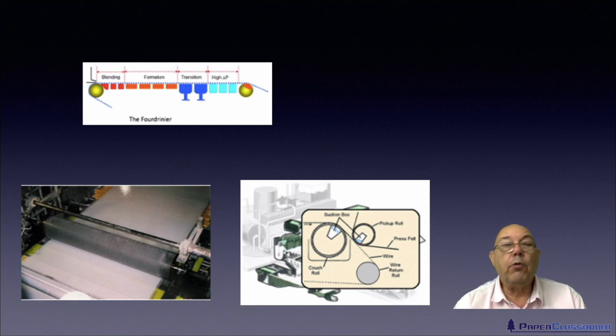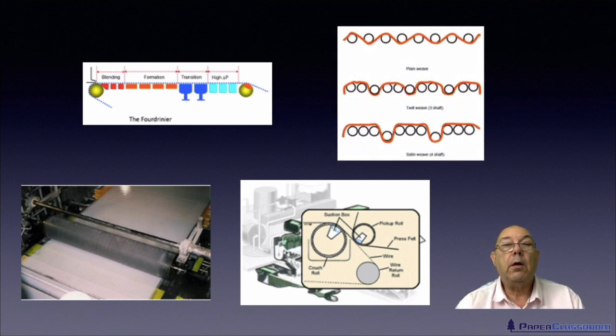Then there's only one roll on top of the wire, and that's the dandy. So how do dandies work? How do we keep them clean? What do they do? What do they not do? And then of course, if we're talking about the wet end and the wire, we need to talk about the weaves, the different materials of construction of forming fabrics, and the different weaves that we have for forming fabrics.